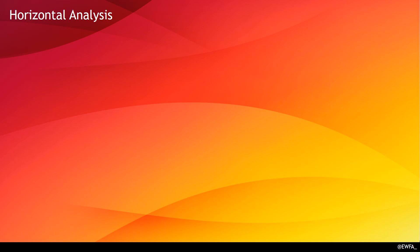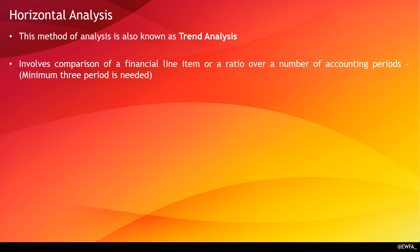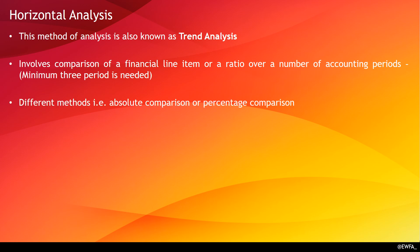Next comes horizontal analysis, also called trend analysis. Here we compare a financial line item, ratio, or number over a number of accounting periods — a minimum of three periods is required. There are different methods: comparison of absolute numbers and percentage change comparison. Items that can be compared include revenues, profit, expenses, cash liabilities, and so on, to understand behavior over a period of time.